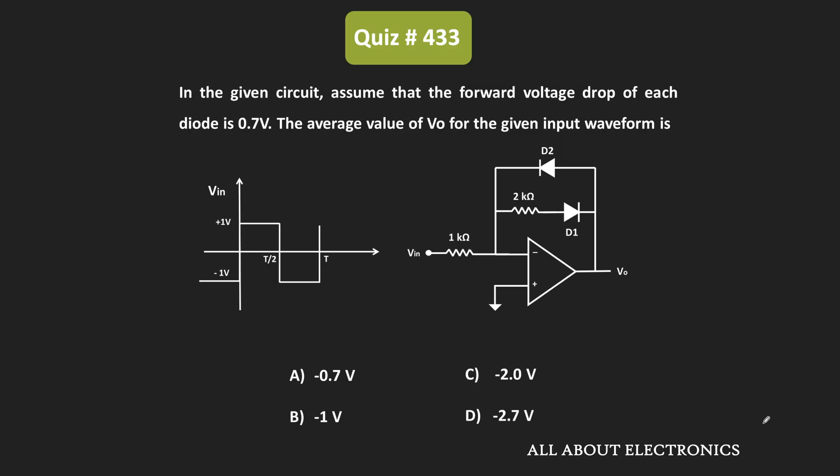Hey friends, welcome to the YouTube channel All About Electronics. In this question, we have been given an open base circuit and we have been asked to find the average value of the output voltage for the given input waveform. As you can see in the question, the forward voltage drop of each diode is equal to 0.7V.